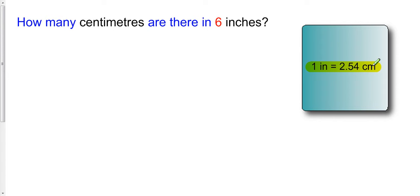Because I have a conversion rate between the units that I have and the units that I want, this becomes a very simple problem. All I need to do is take what I have, which are my 6 inches, and I'm going to multiply by my conversion rate.